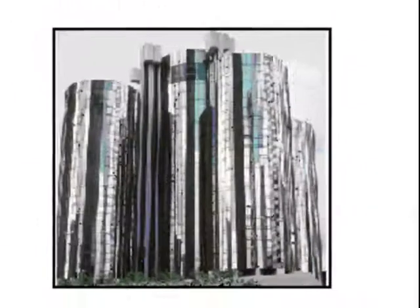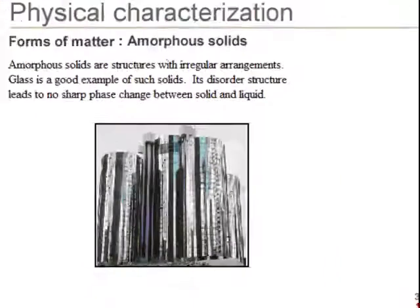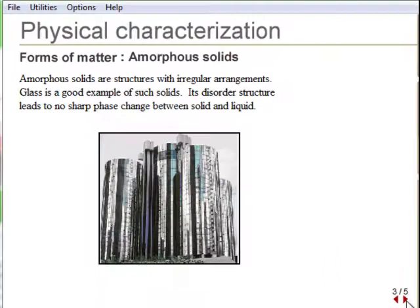The other form is the amorphous or glass phase. A glass can be considered to be a supercooled liquid, and when it melts it does so slowly over a large temperature range.